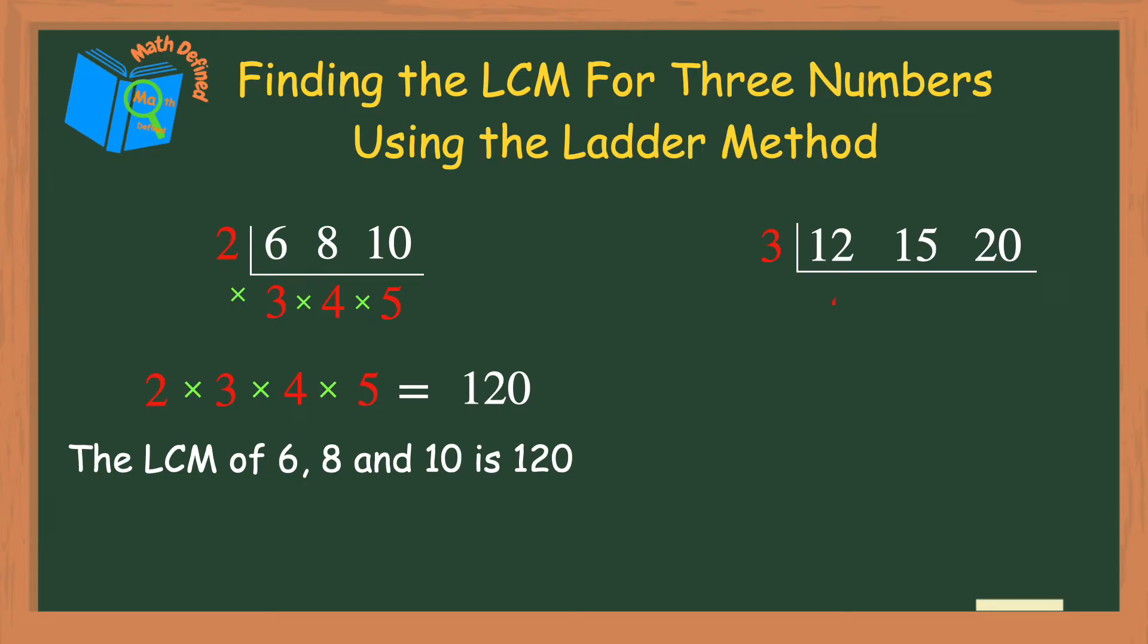12 divided by 3 is 4, and 15 divided by 3 is 5. Since 3 does not divide evenly into 20, I just bring it down. Now I need to choose another shared factor for at least two of the numbers, and I'll choose 4 this time.